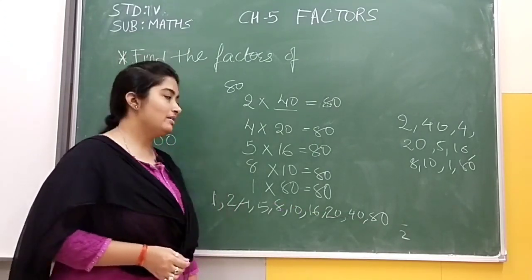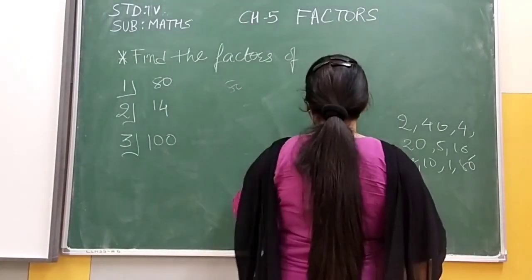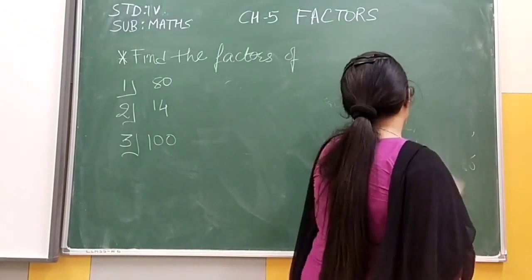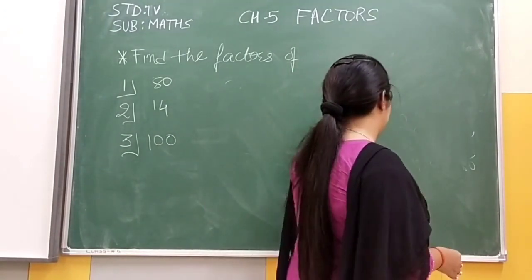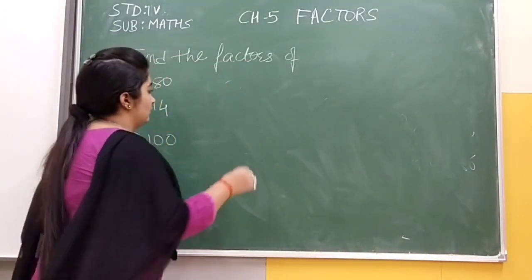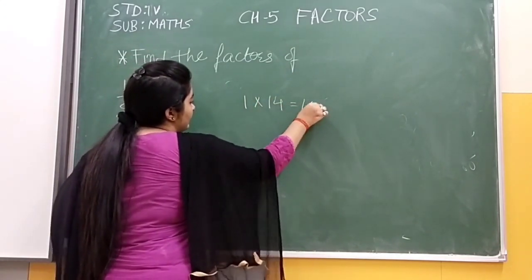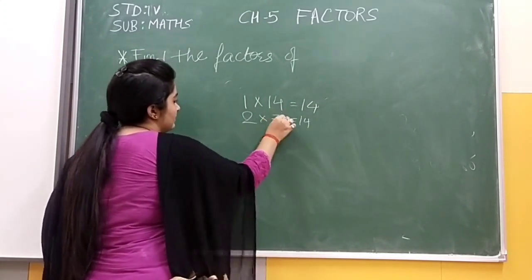Let us see another one. The next one is 14. That is so easy. 1 into 14 is 14. Then 2 into which number is 14? That is 7.